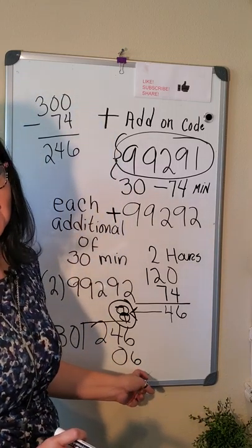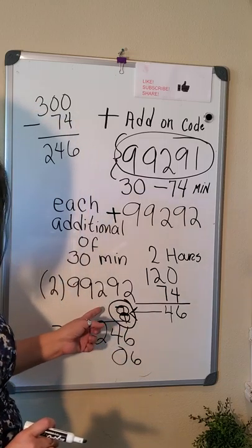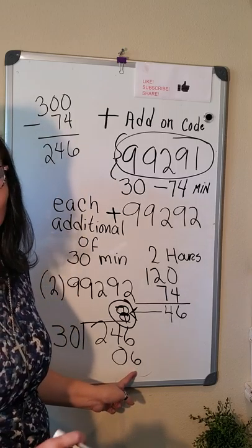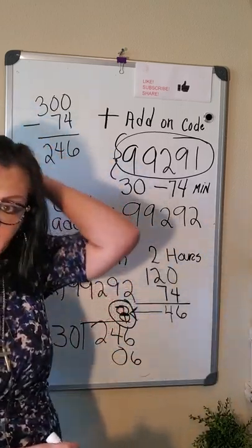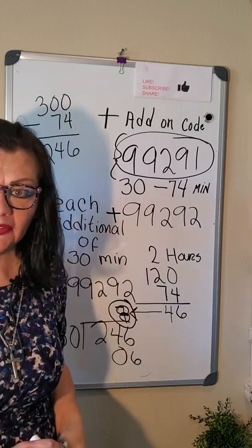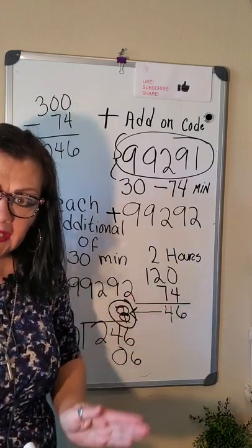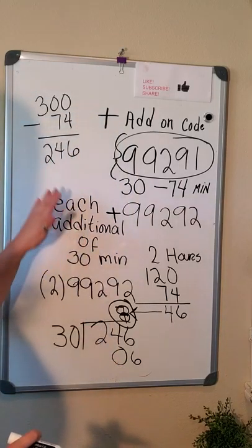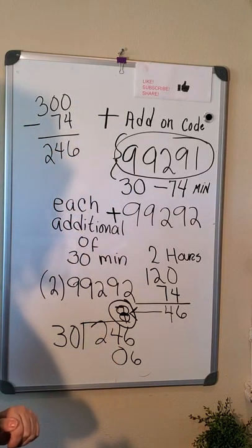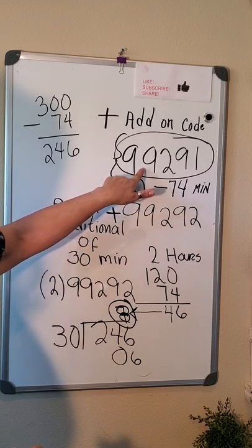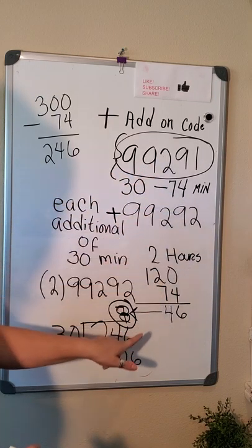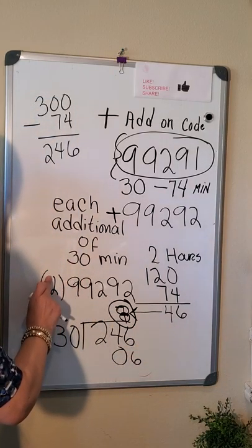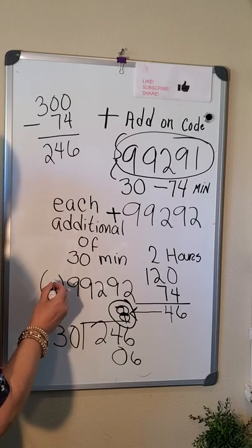There are 8 full 30-minute increments in 246 minutes, with 6 minutes remaining. So are you going to use 8? No — you're going to use 9, because there are remaining minutes that count as another increment of up to 30 minutes. Any remaining time, you convert it into another 30-minute unit. So if the patient was seen for 5 hours, you use 99291 first, and then 99292 nine times.